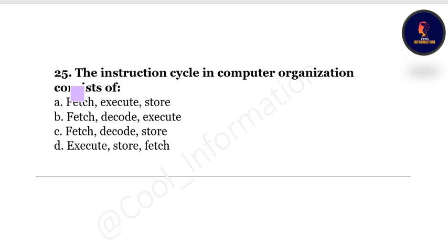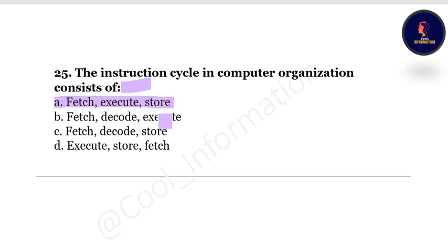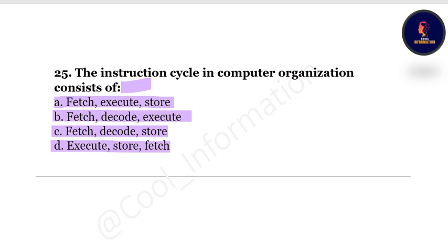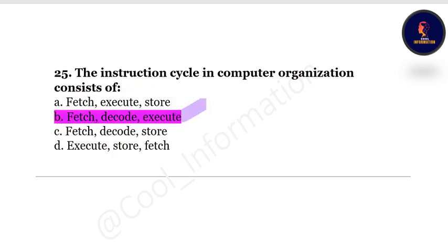Question 25: The instruction cycle in computer organization consists of — Option A: fetch, execute, store; Option B: fetch, decode, execute; Option C: fetch, decode, store; Option D: execute, store, fetch. The correct answer is fetch, decode, and execute.